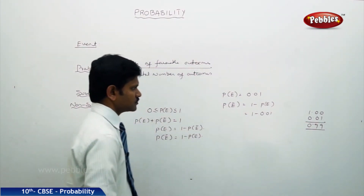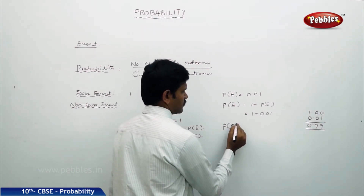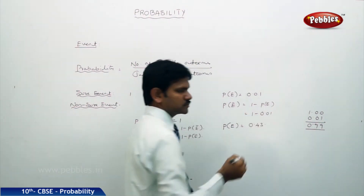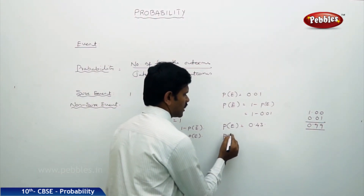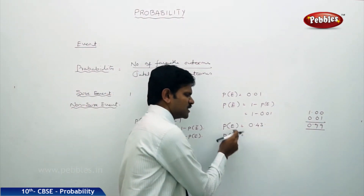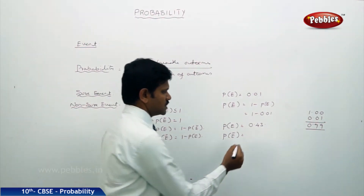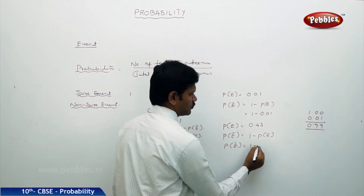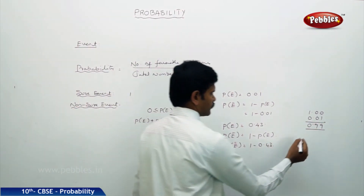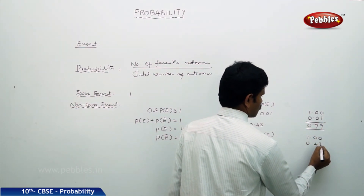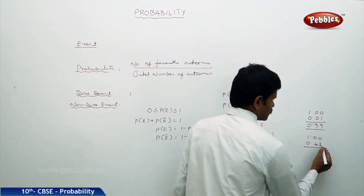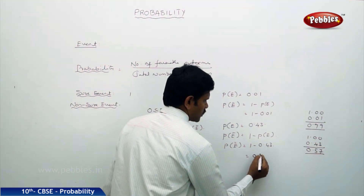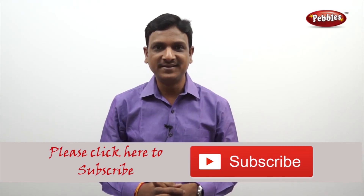Next, the probability of getting good marks in the examination is P(E) = 0.43. The probability of not getting good marks, P(Ē), uses the formula P(Ē) = 1 − P(E), that is 1 − 0.43 = 0.57. So 0.57 is the probability of students not securing good marks in the examination.